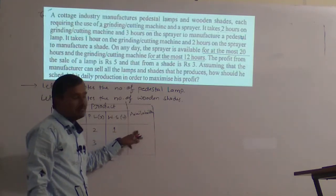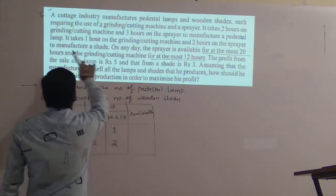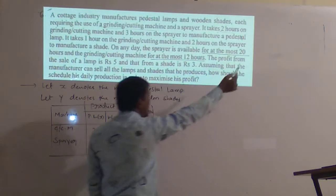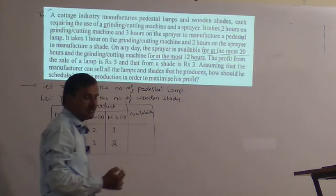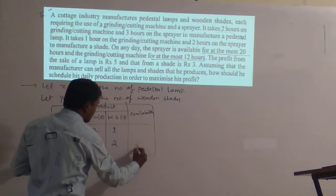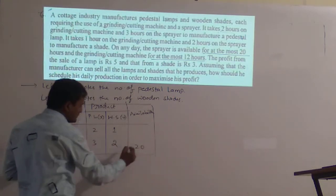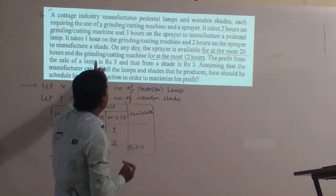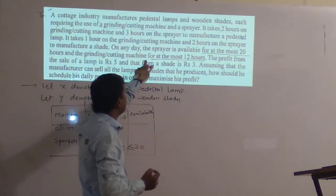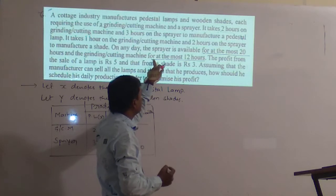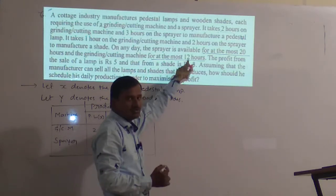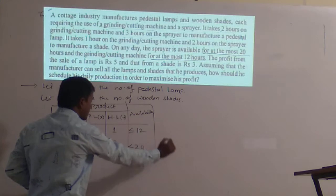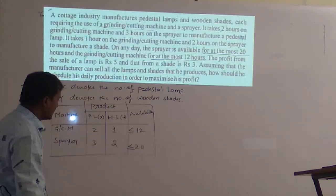Now I have to write the availability. On any day, the sprayer is available for at most 20 hours — 'at most' means we will take less than or equal to. The grinding or cutting machine is available for at most 12 hours, so again we write less than or equal to.